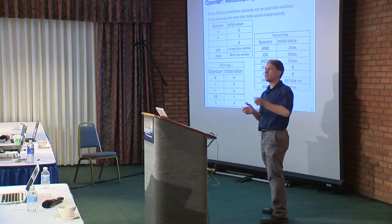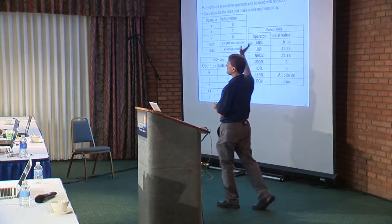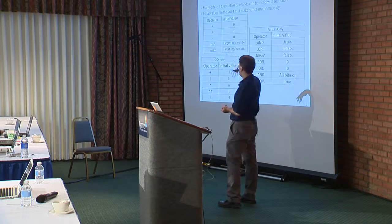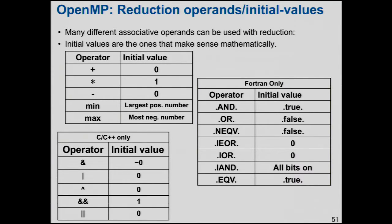How does it implement the reduction? That is an implementation detail — hopefully it does it the most efficient way for the number of threads you're using and the architecture on which you're running. What you're guaranteed is that you get the right answer. The private copies get initialized to the identity value for the operator: for a sum reduction they initialize to zero, for a product they initialize to one. OpenMP has several predefined operators for C, C++, and Fortran with the correct initial values stated. In your thread you're doing the operation on that private value, and then you do that operation into the shared value.